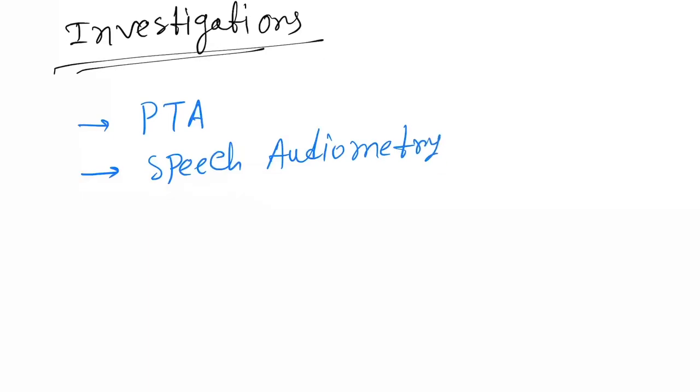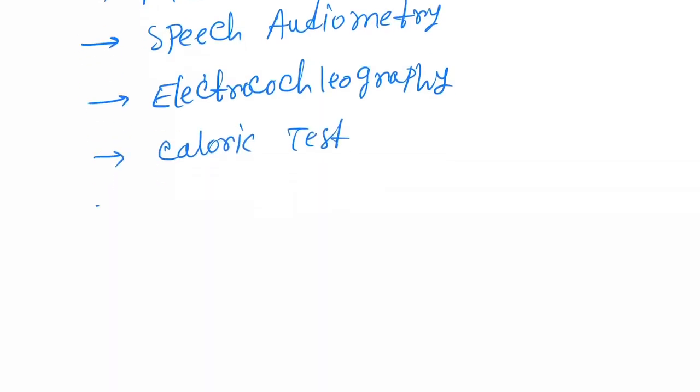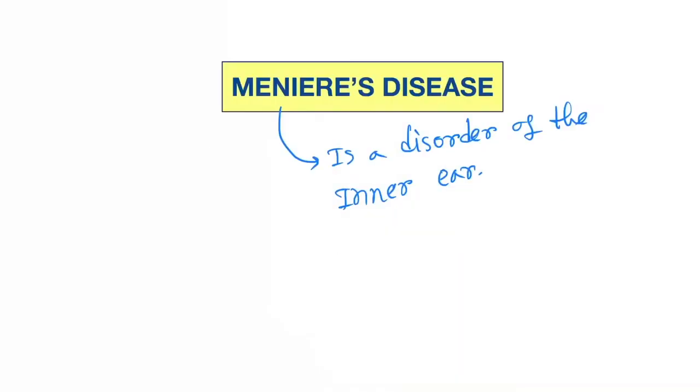Next are investigations. We can do PTA, that is pure tone audiometry, electrocochleometry, electrocochleography, caloric test, and glycerol test. This is the basic information about Meniere's disease.